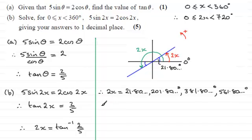Now we divide each of these by 2 to give us x. So we get 10.90...°, 100.90...°, 190.90...°, and 280.90...°.